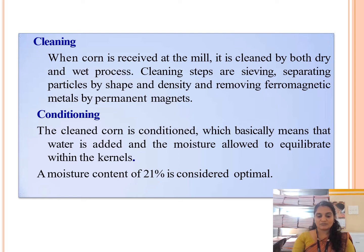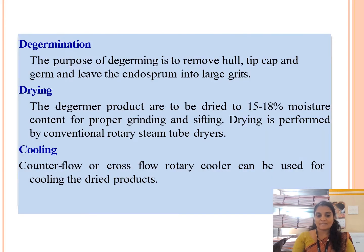In the conditioning process, the clean corn is conditioned, which basically means that water is added and the moisture is allowed to equilibrate within the kernels. The moisture content of the corn after the conditioning process is 21%.